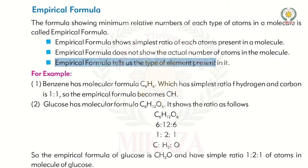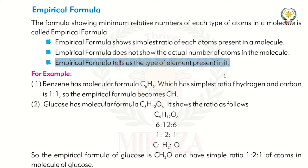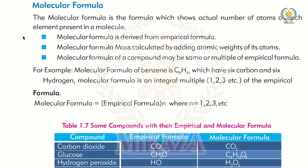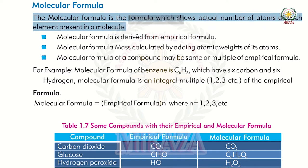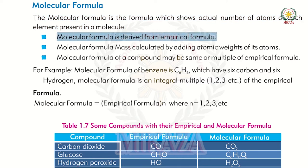The empirical formula tells us the type of elements present in the compound. Next we have molecular formula. The molecular formula is a formula which shows the actual number of each element present in a molecule. The molecular formula is derived from the empirical formula.